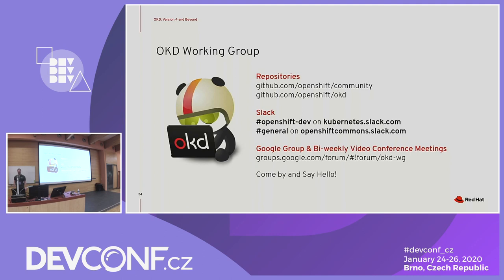There will be an issue template in the OKD repository. The OKD repository in the OpenShift organization on GitHub is the place to file bugs and everything. We'll triage them and open Bugzillas internally, and refer those bugs to the respective team to get them fixed. Anything technical — the OKD repository on GitHub. Look at bugs and fix them. Thank you!